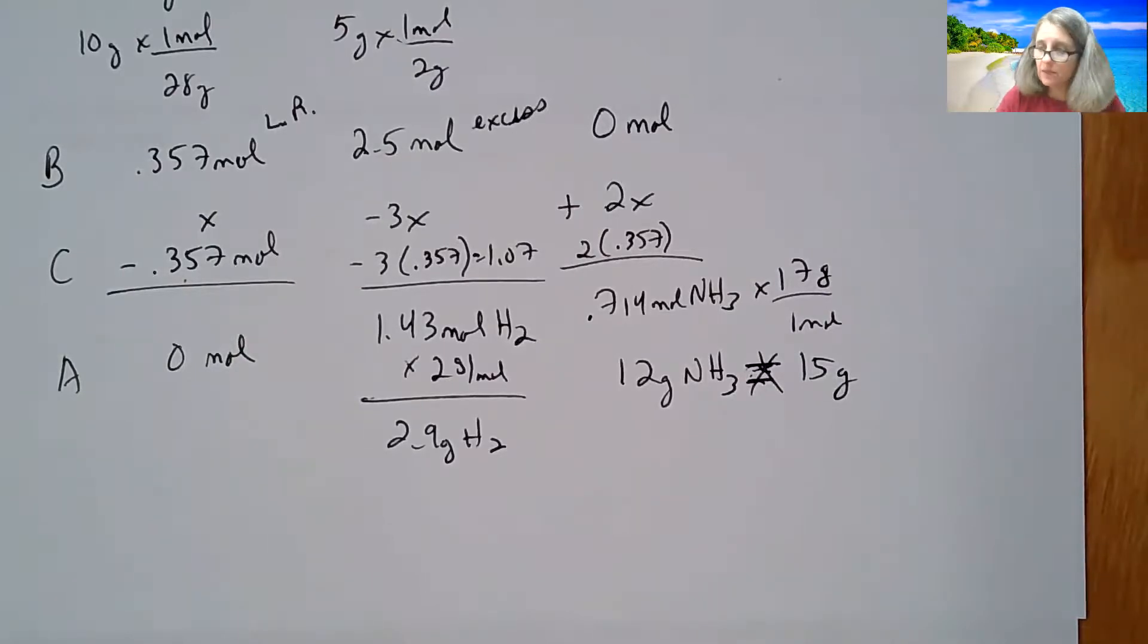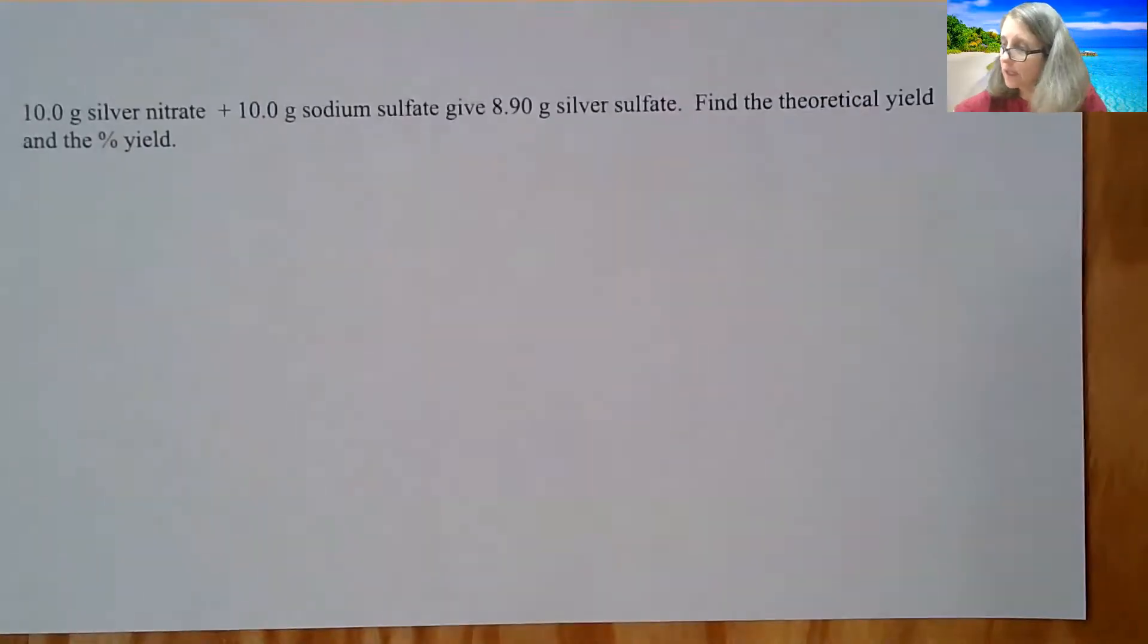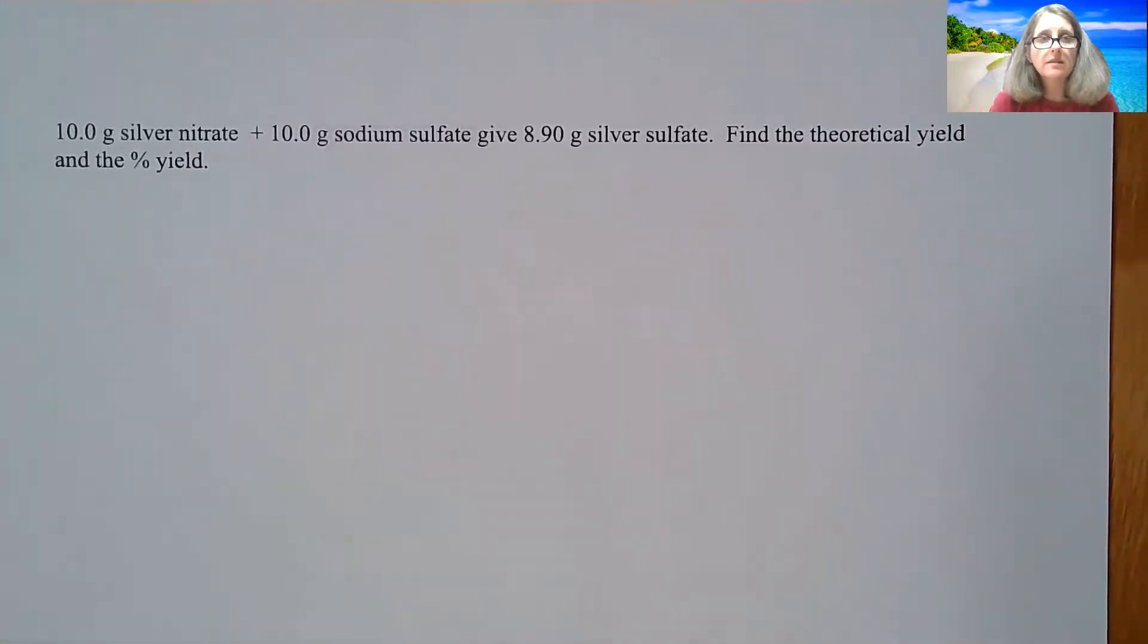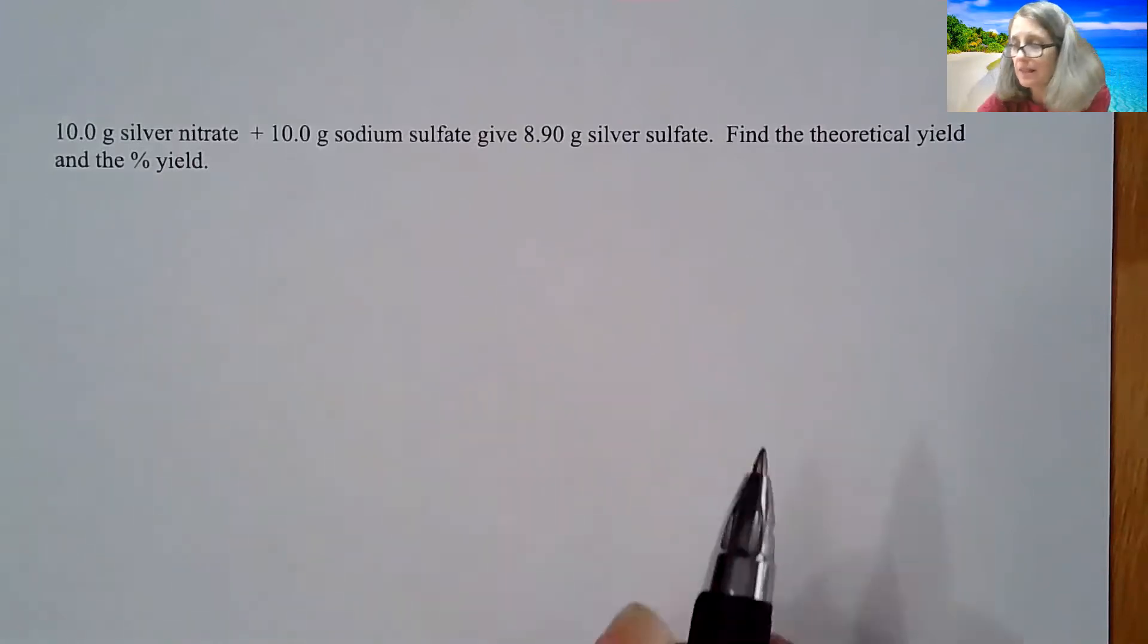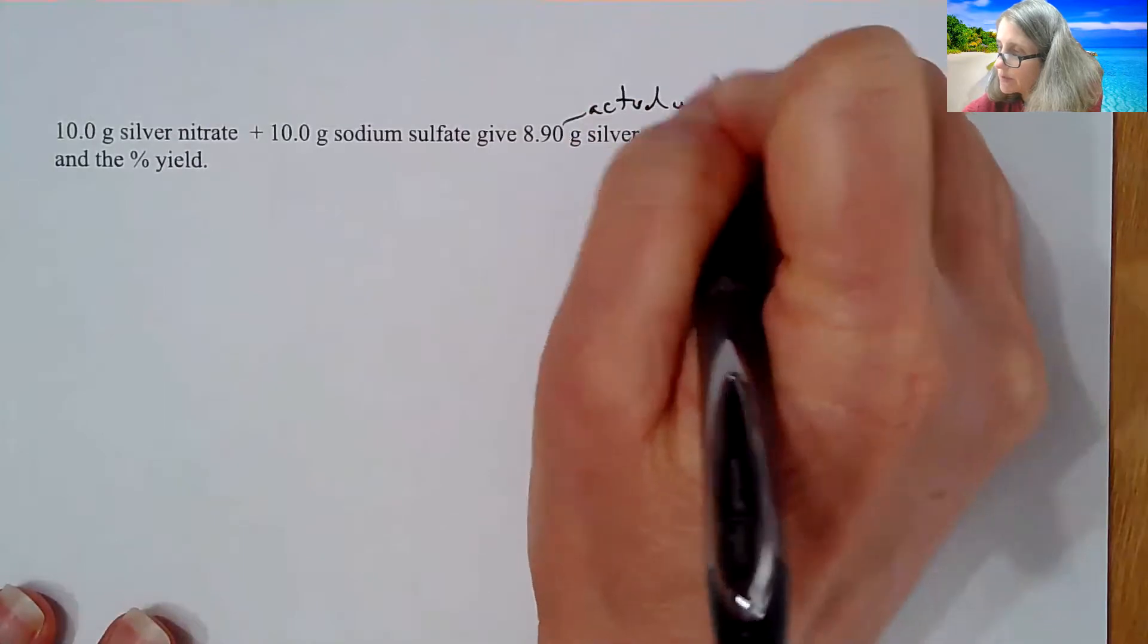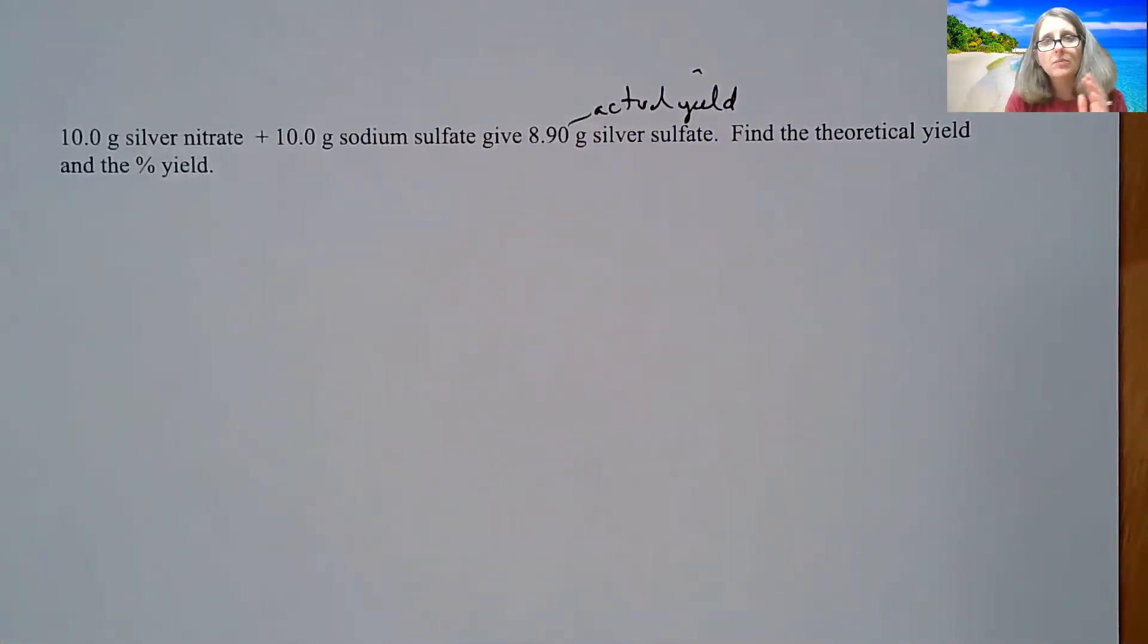So the next problem, I have 10 grams of silver nitrate and 7, excuse me, 10 grams of silver sulfate. It's asking essentially what is, and if I give 8.9 grams of silver sulfate, find the theoretical yield and the percent yield. So this is your actual yield in this problem. So this is kind of doing a stoichiometry problem and a percent yield problem.